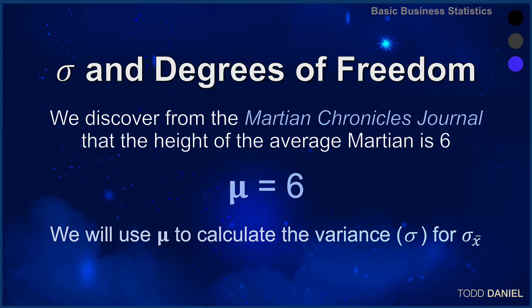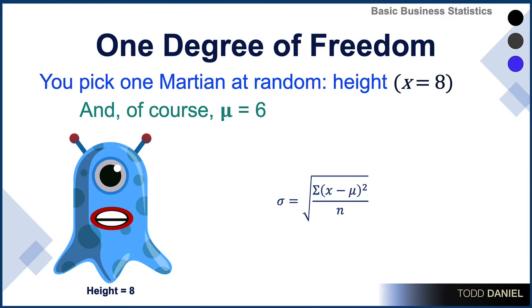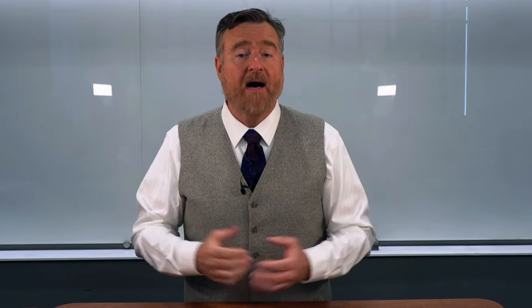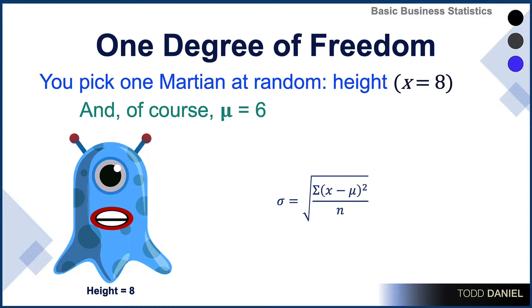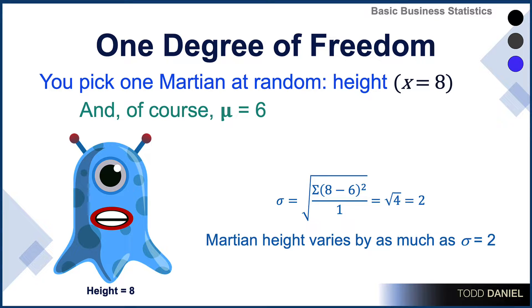You are doing some Martian research. You are going to randomly select Martians to measure their height. We will use the population mean to calculate the variance in your sample so we can calculate the standard error of the mean. We begin simply by randomly selecting a single Martian. We discover that his height is eight mahu. He's a little taller than average. Because we know the height of the average Martian, we can plug in the mean of six and determine that the variability of Martian height is as much as two units.